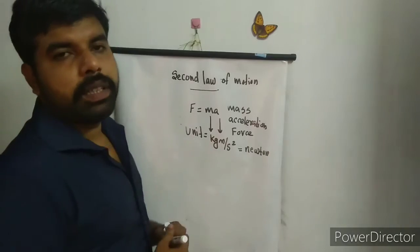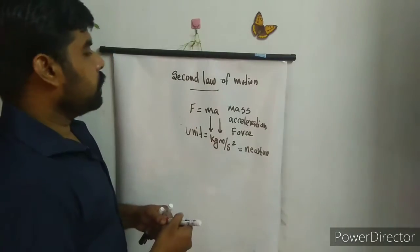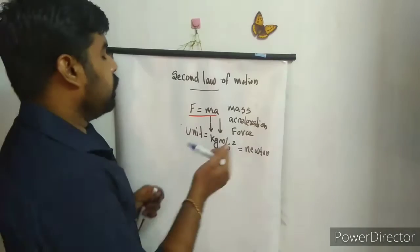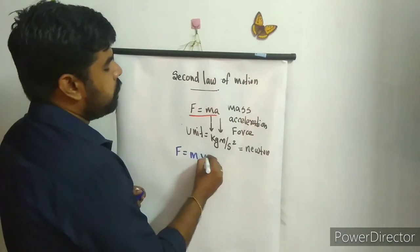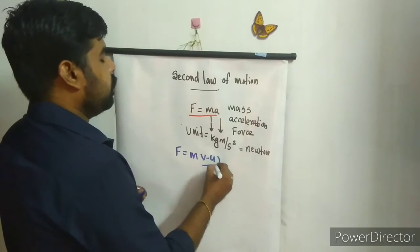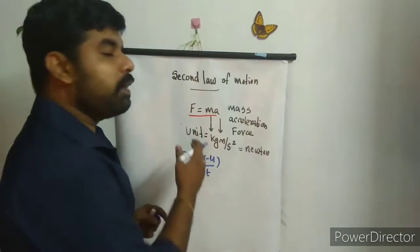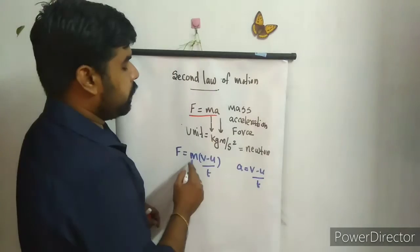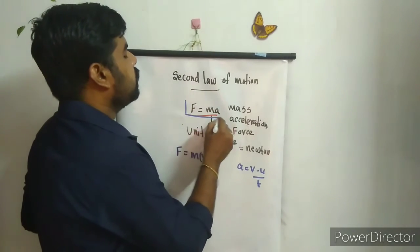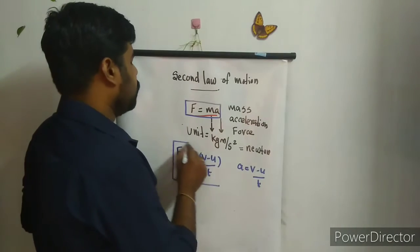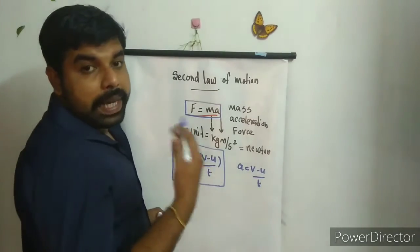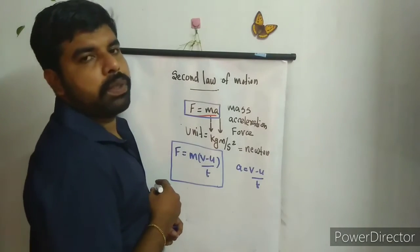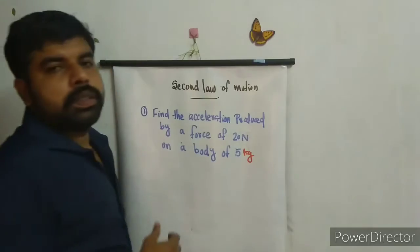We have another equation for the second law of motion. For solving problems we need two equations. The first equation is F equals ma, and the second equation is F equals m into (v minus u) by t. Here, v is the final velocity, u is the initial velocity, t is the time, and m is the mass of the object.